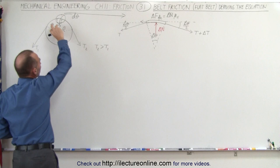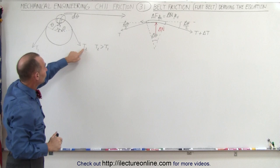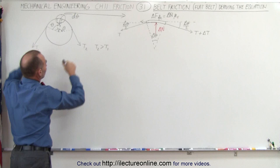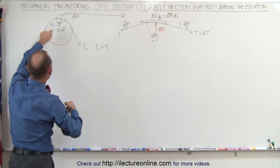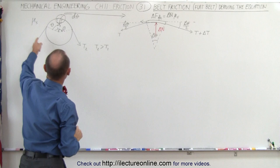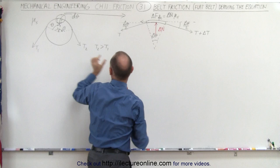We take a small segment of that and call that small angle d theta, and we're going to look at it in more detail. The tension T2 will be greater than the tension T1 if the belt is moving in this direction. There is going to be friction between the belt and the drum or peg, and we'll call that mu sub s.